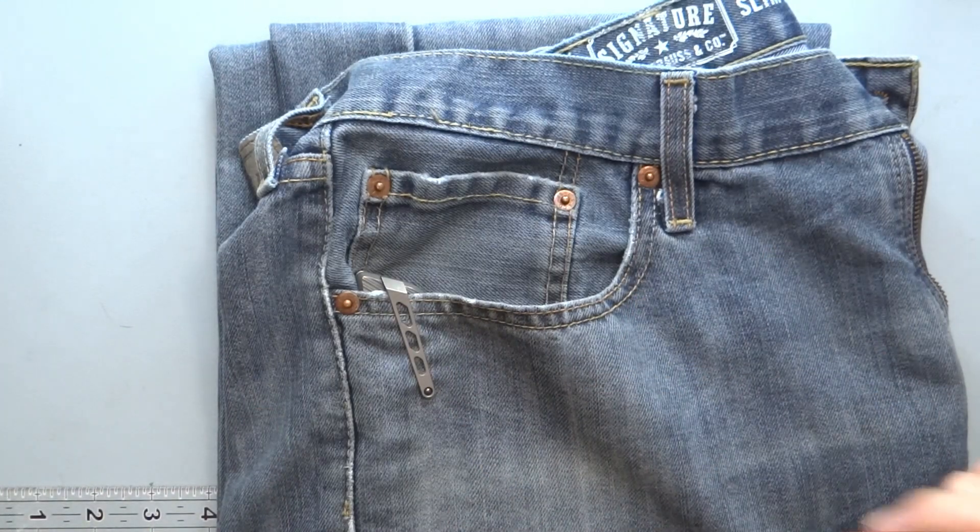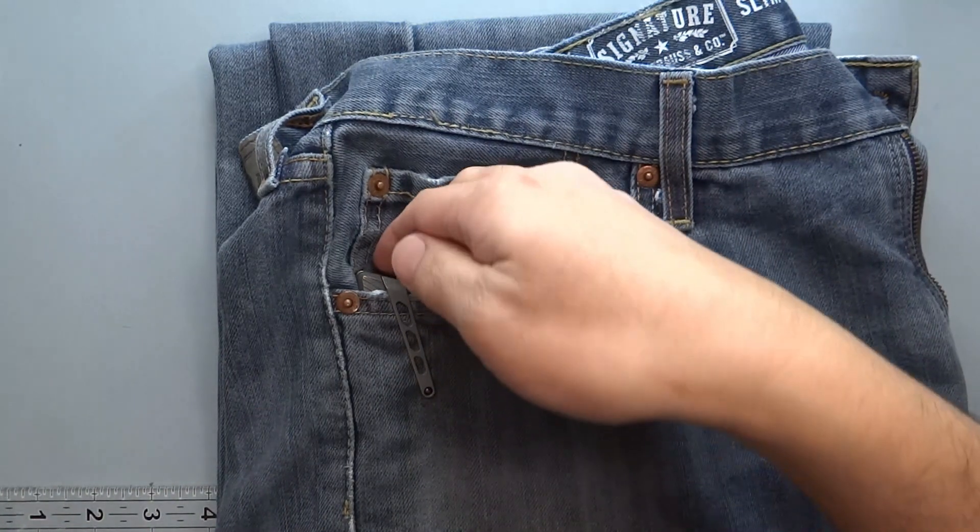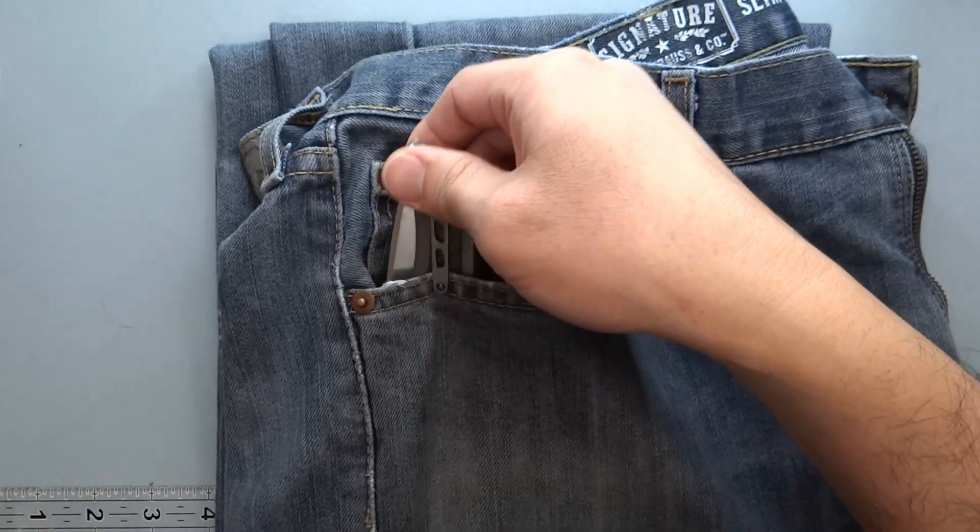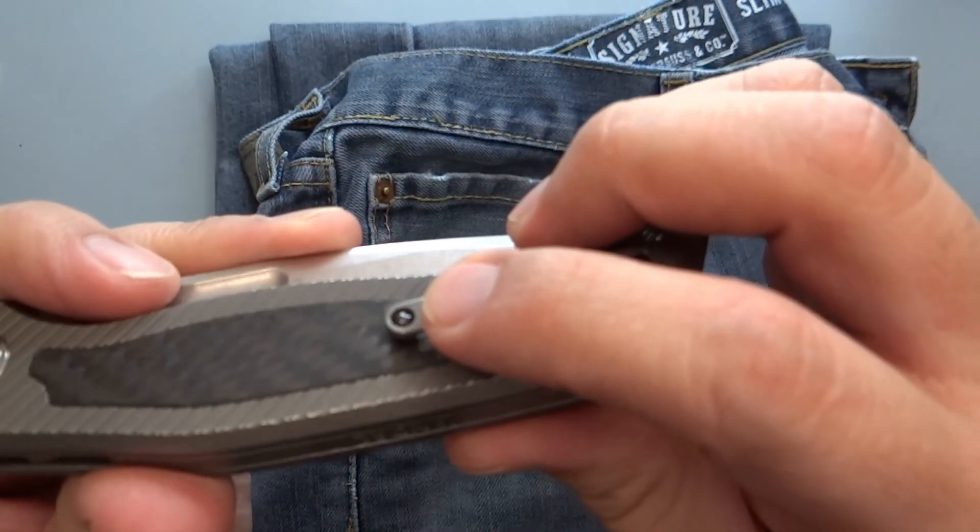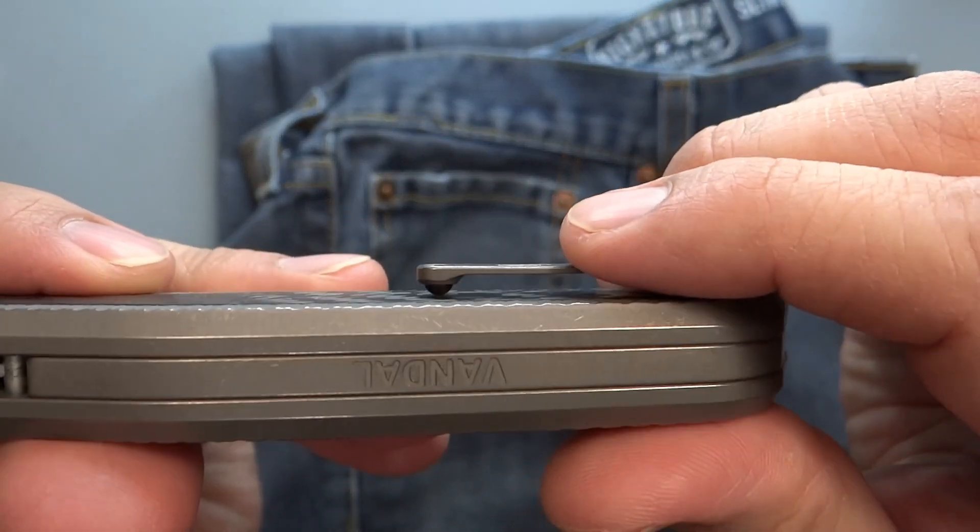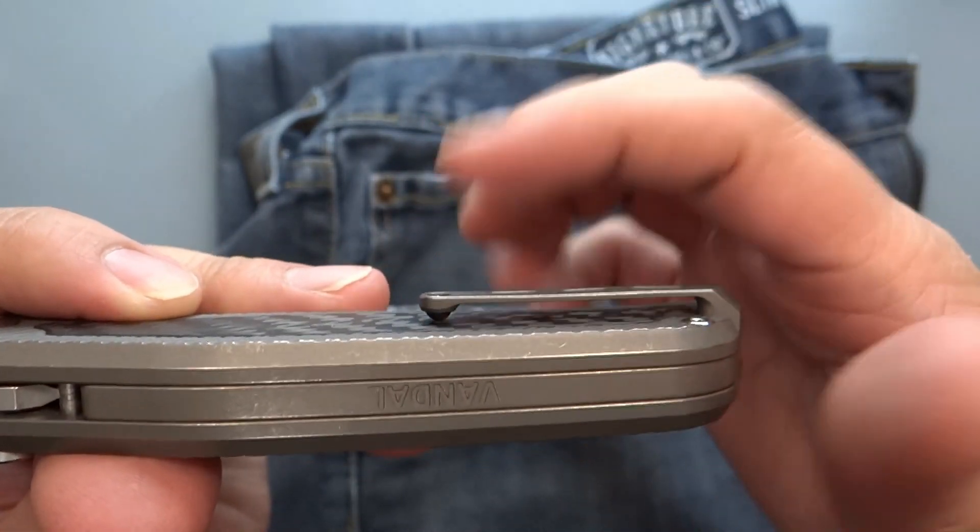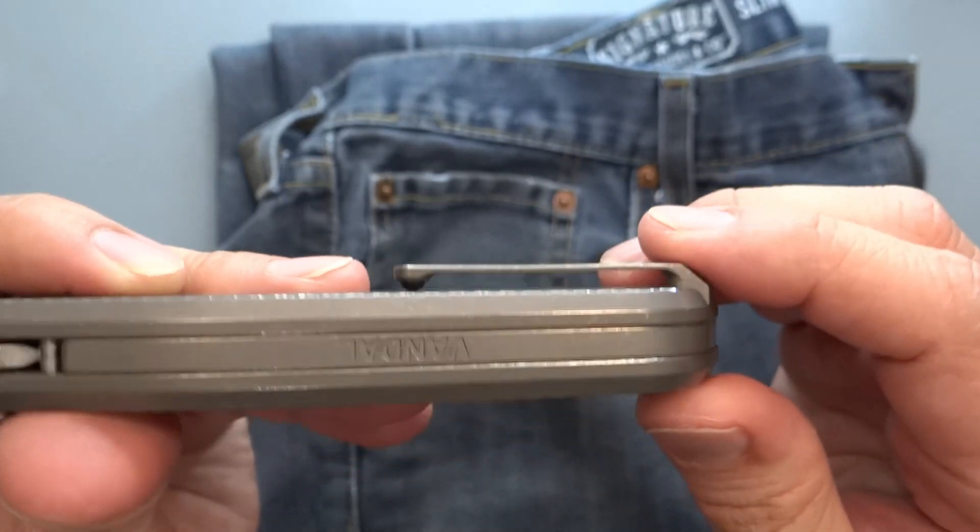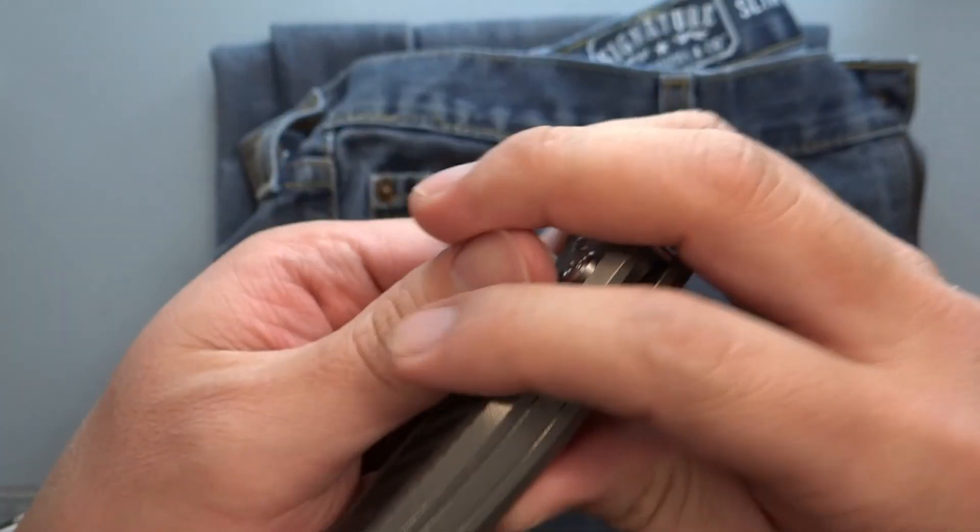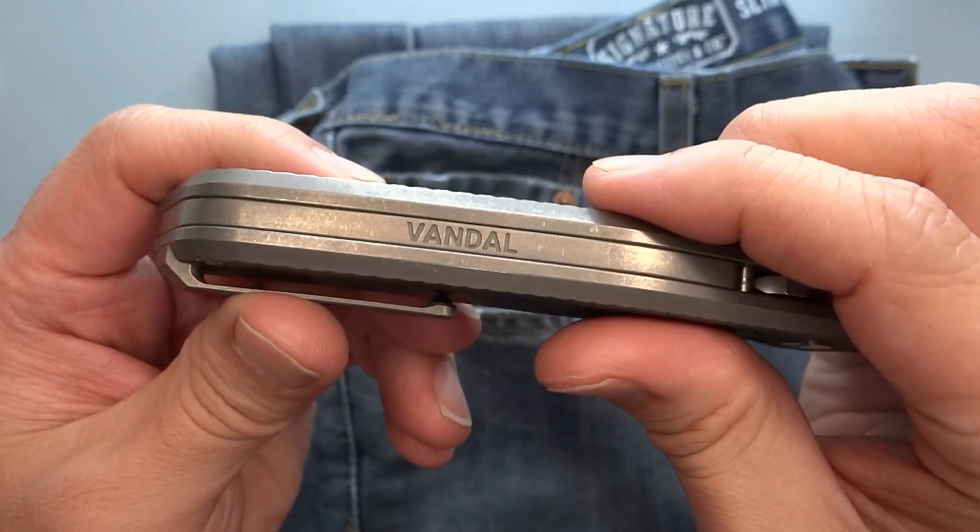This is what it sits like in the pocket. It does have what looks like a ceramic ball for that pocket clip there. Decent in and out of the pocket. It holds up a little bit if you have some thicker fabrics, and there's where it says Vandal right there.